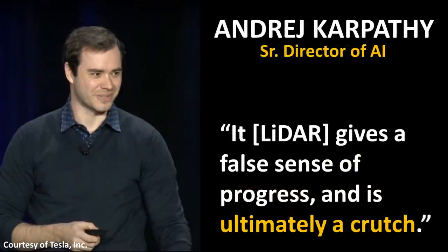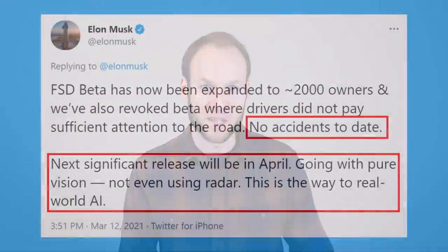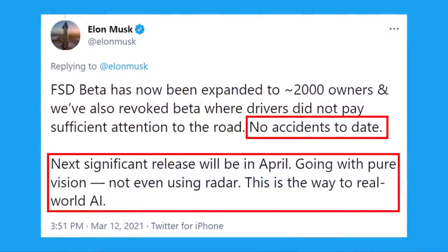Tesla's senior director of AI, Andre Karpathy, even said it, referring to LiDAR, gives a false sense of progress and is ultimately a crutch. Tesla doesn't use LiDAR, but they currently do use radar, a front-facing radar in their vehicles. However, according to this March 12th tweet from Elon Musk, with the next significant release of their full self-driving beta, they're going to be going with pure vision and not even using radar. Tesla is going to be really pushing the limits of a camera-based vision system and Elon Musk appears very confident that they're going to be able to ship a system that is safe using camera vision alone.